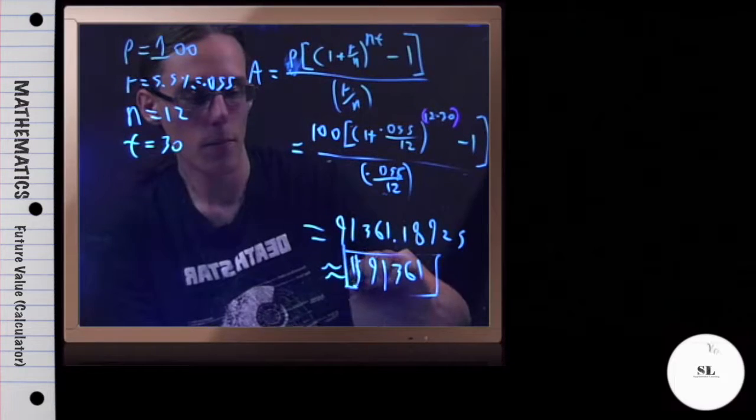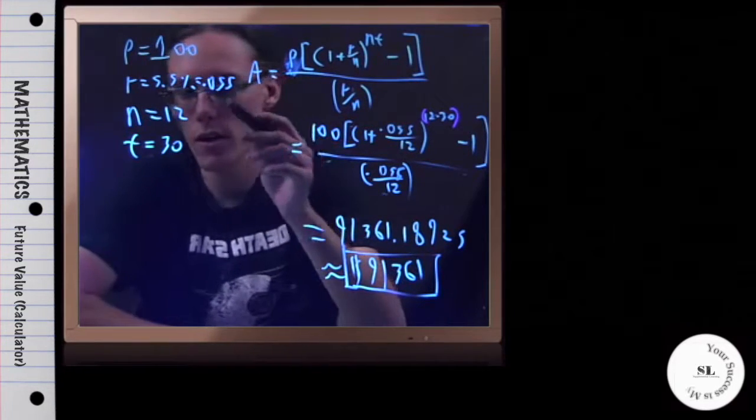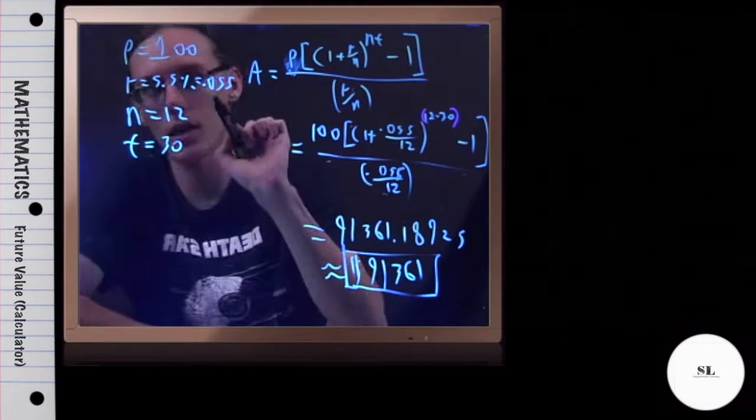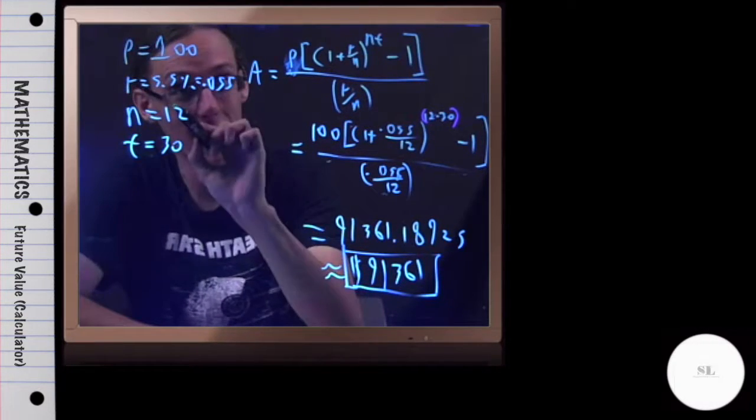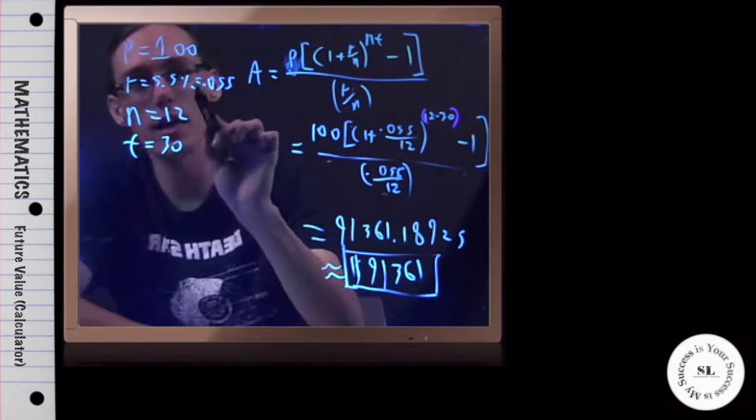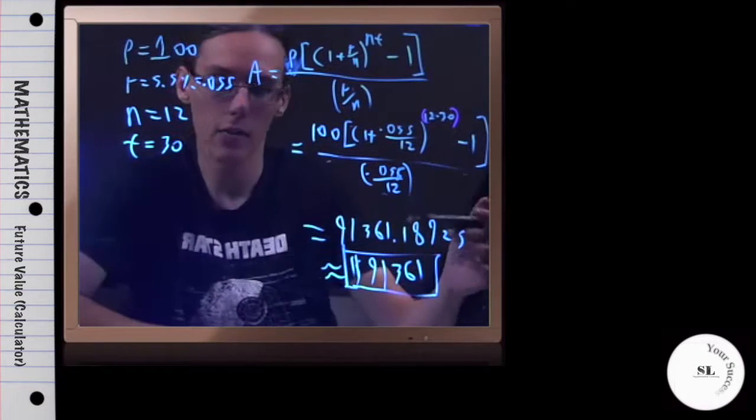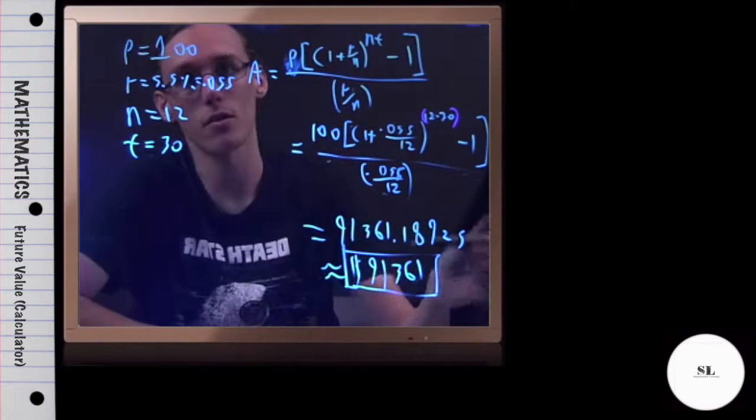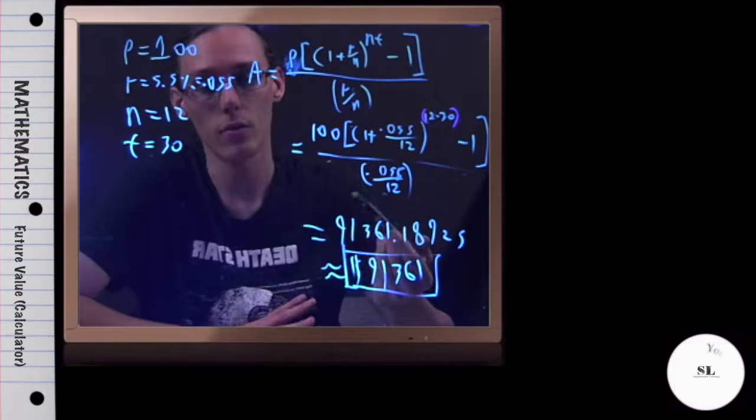If we make monthly payments of $100 every month for 30 years in an account that has a 5.5% interest rate, then finally at the end of all that, we should have $91,361 in that account. And that is this example.